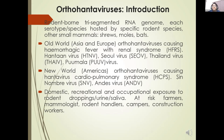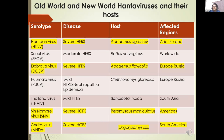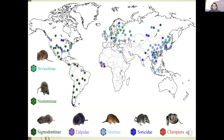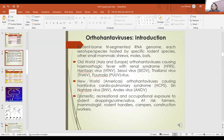Since orthohantiviruses are transmitted by rodents, domestic exposure is possible. Transmission from rodents to humans can occur in domestic settings or recreational settings, for example when campers get exposed to rodent excreta. Aerosols generated from contaminated droppings, urine, or saliva of rodents can infect humans. There can also be occupational exposure in farmers, mammologists, or rodent handlers.